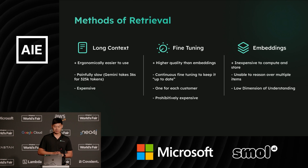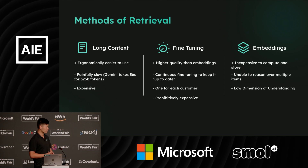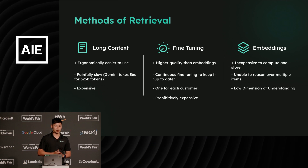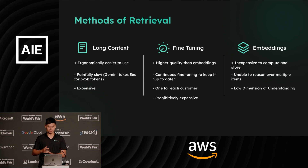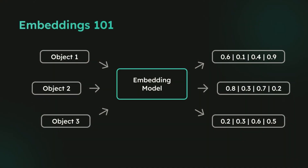And finally, we have embeddings — a relatively proven technology today. It's pretty inexpensive to compute and store. But the difficulty we're about to dive into is that it is hard to reason over multiple items, and it also has a low-dimensional space. The whole concept is that you take your objects, throw it through an embedding model, and you end up with some sort of vector — an array of numerical values in a fixed dimension. By mapping and chunking code to an embedding, we can quickly search over our functions and documents — and this is what embedding search is.